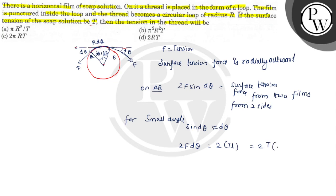We can cancel d theta from both sides, so 2F equals 2RT. This gives us the tension force in the thread.